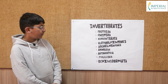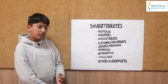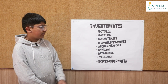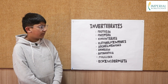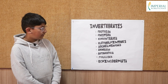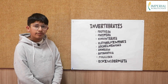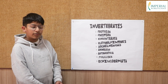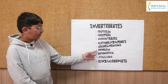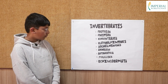In Aschelminthes, they have a cylindrical and unsegmented body, and an example is a roundworm. In Annelida, we have worms that have a cylindrical and segmented body, and an example is the earthworm.